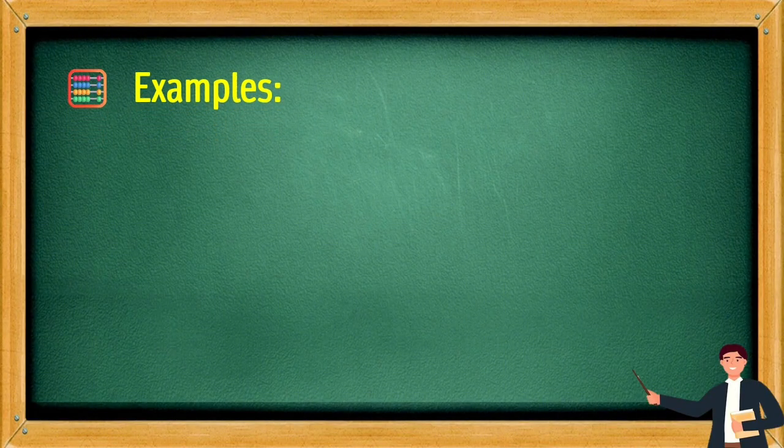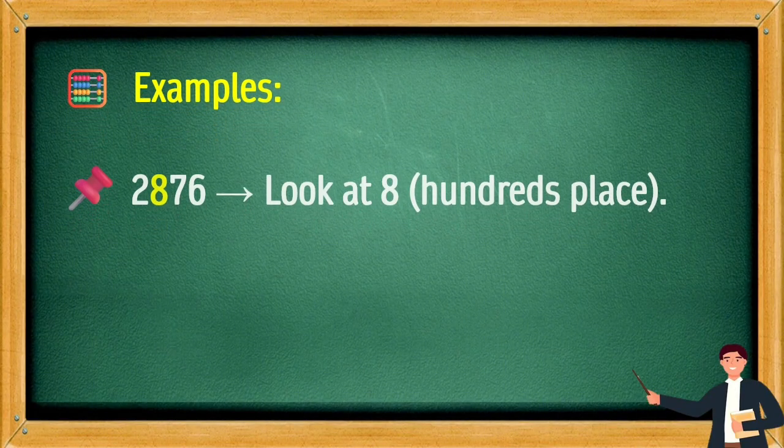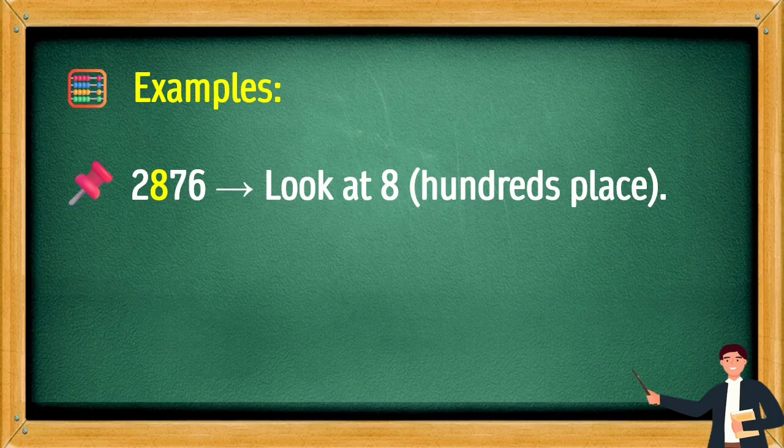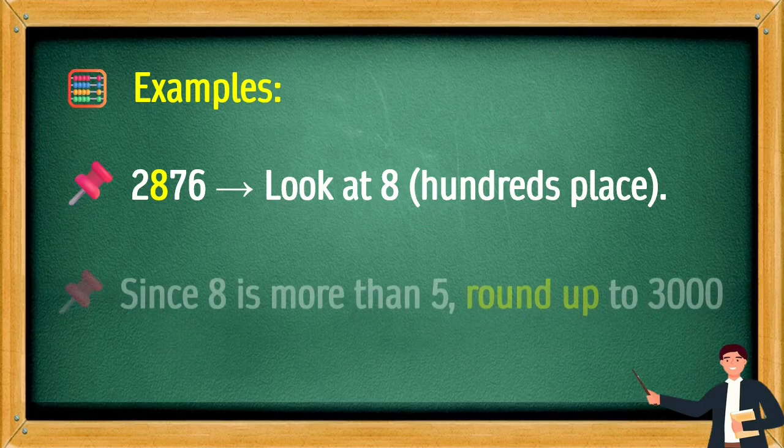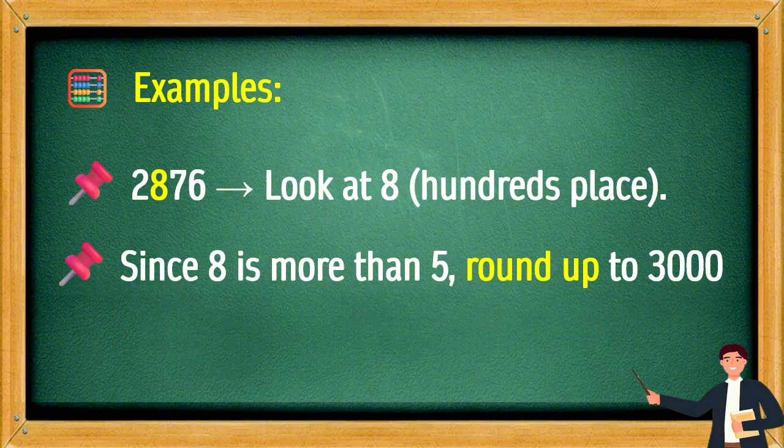Examples: 2,876. Look at 8 in the hundreds place. Since 8 is more than 5, round up to 3,000.